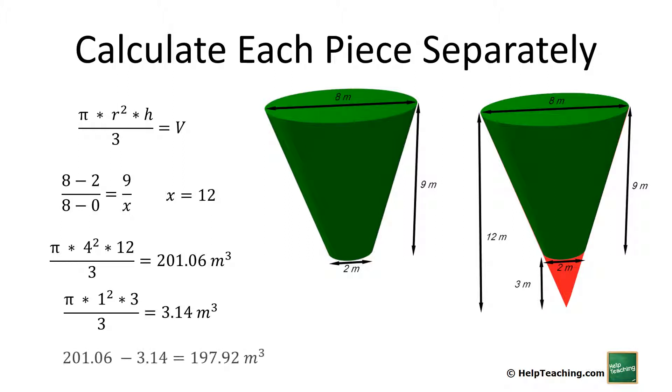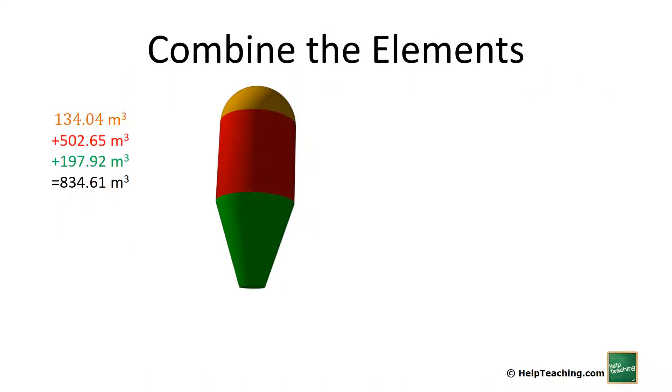So 201.06 minus 3.14 gives us 197.92 cubic meters, and we combine the elements giving us a total volume of 834.61 cubic meters for each silo.